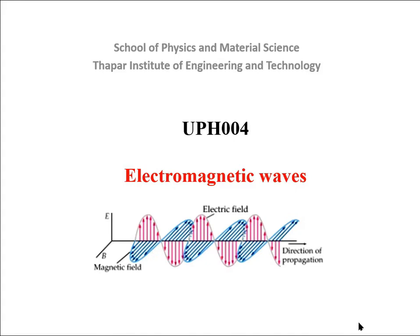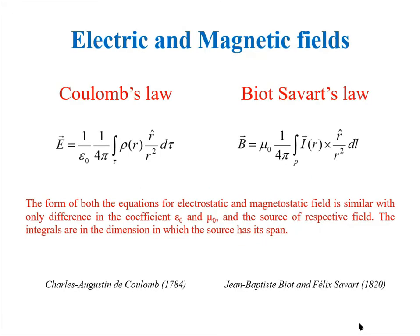Before starting the lecture, let me tell you how in novice perception one can see similarity in electric and magnetic fields. To find the electric field and magnetic field induction, you have two laws namely Coulomb's law and Biot-Savart law.